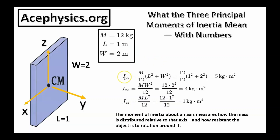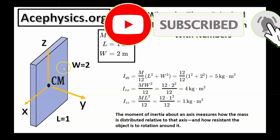Let's use these formulas with specific numbers: a plate of mass 12 kg, length 1 m, and width 2 m. The moment of inertia about the y-axis is 5 kg·m², about the x-axis is 4 kg·m², and about the z-axis is 1 kg·m². The moment of inertia is largest about the y-axis because mass is spread farthest from that axis, smaller about the x-axis where mass is closer in, and smallest about the z-axis where mass is closest of all.